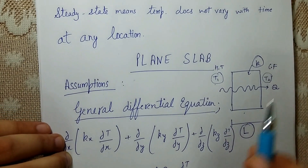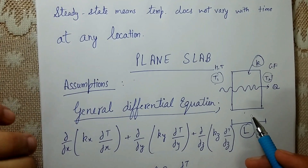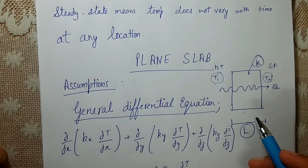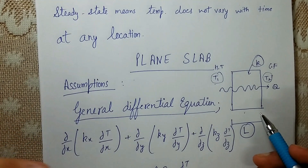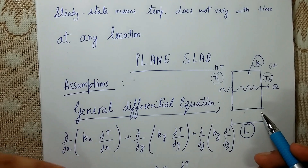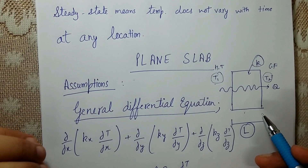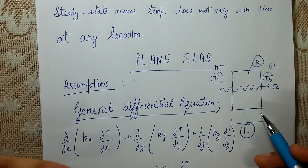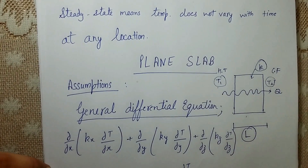The slab has thermal conductivity K and heat flows from high temperature to lower temperature. As a chemical engineer, you must know what assumptions you are taking for any derivation. The difference between a tenth-grade student and a chemical engineer is that the engineer knows the assumptions on which the derivation is based.